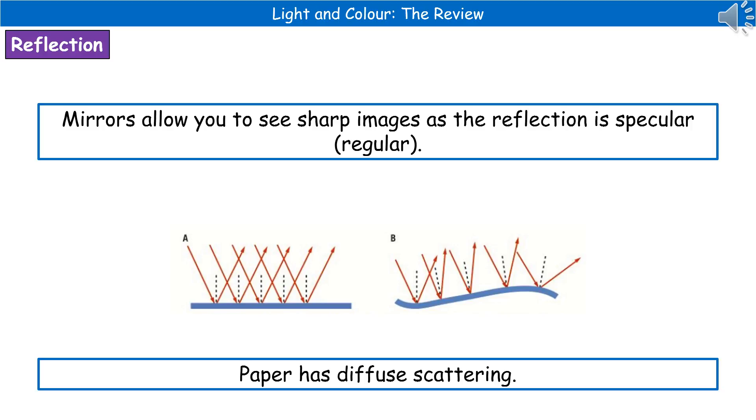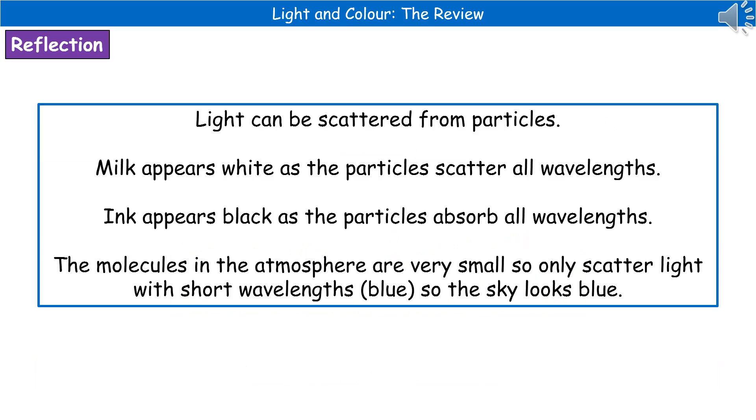If we were to try to use a bit of paper for the same thing, it just doesn't work. Because the paper has what's called diffuse scattering. You can see the different pictures there in the middle showing you this. On the left, we've got our mirror. And on the right, we've got our bit of paper.